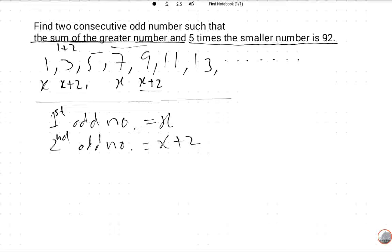The sum of the greater number and five times the smaller number. So what will we do? Sum. So X plus 2 plus 5X equals 92.